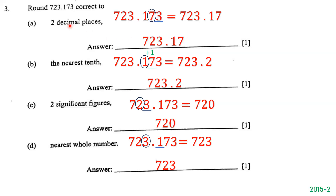Now they want us to round 7723.173 correct to the nearest tenth. The tenths place is the first number to the right of the decimal point, which is 1, so we circle 1 and underline 7 to its right. Since 7 is greater than 5, we round up: 1 plus 1 is 2. We drop the 7 and 3, giving us 7723.2. The answer is 7723.2.